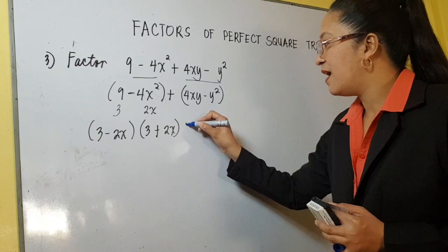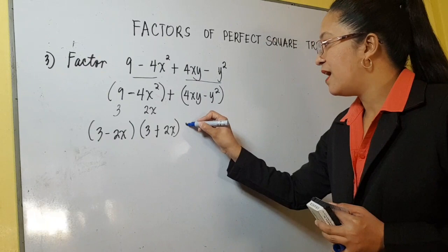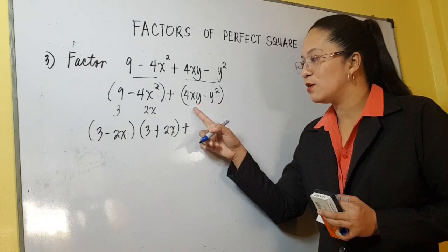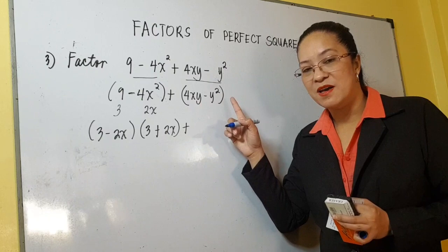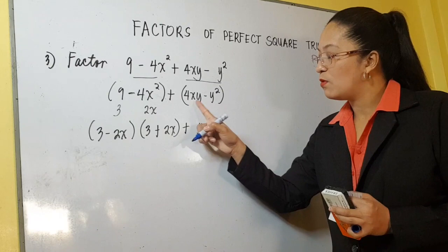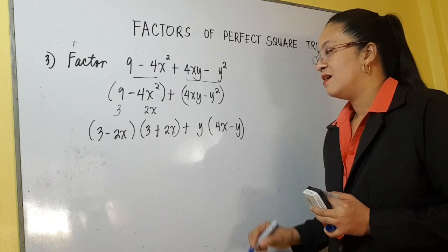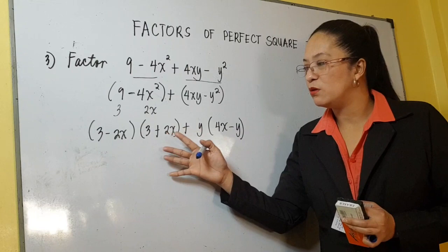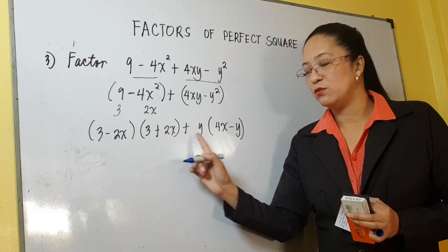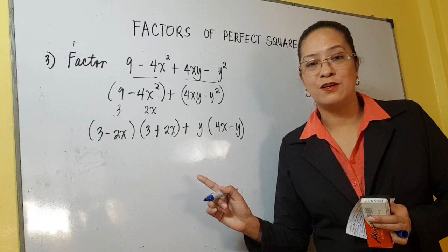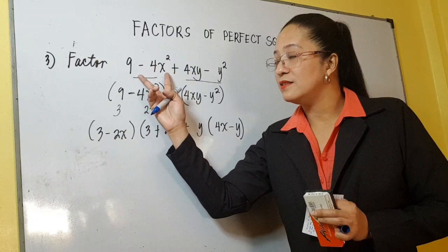Plus, you have here 4xy minus y squared. Is there a common factor? Yes — may y, may y. Therefore y is a common factor, so 4xy divided by y is 4x, minus y squared divided by y is y. Pero hindi pa yan ang complete factors kasi meron bang common factor yung dalawang terms? There's no common factor. So hindi nag-work yung pag-group natin ng first two and last two.